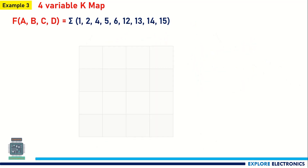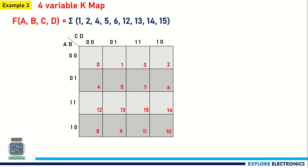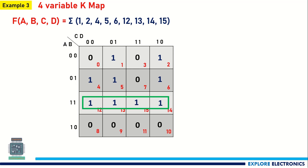Here is one more example with A, B, C, D. The minterms are 1, 2, 4, 5, 6, 12, 13, 14, and 15. First, identify four adjacent ones — that gives one group. Then these two adjacent ones combined with two others form another four-cell group. One cell is left out on its own, so we must include it as a separate group.